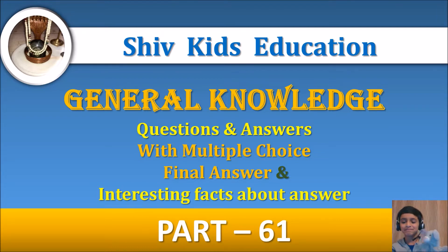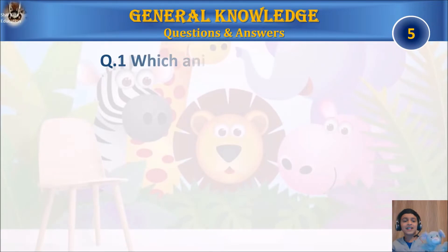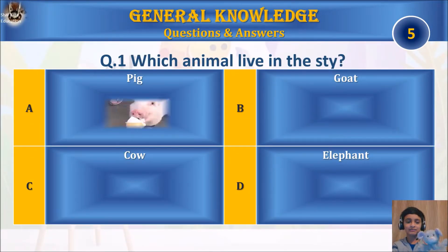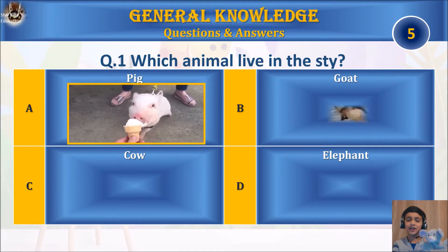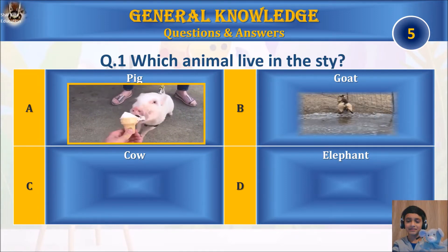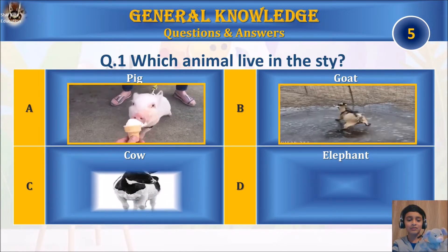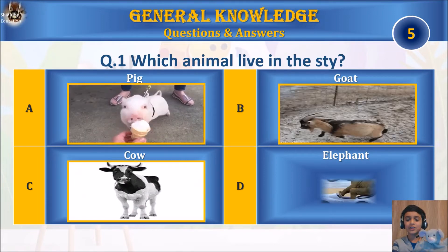Question one: which animal lives in the sky? A) pig, B) goat, C) cow, or D) elephant.